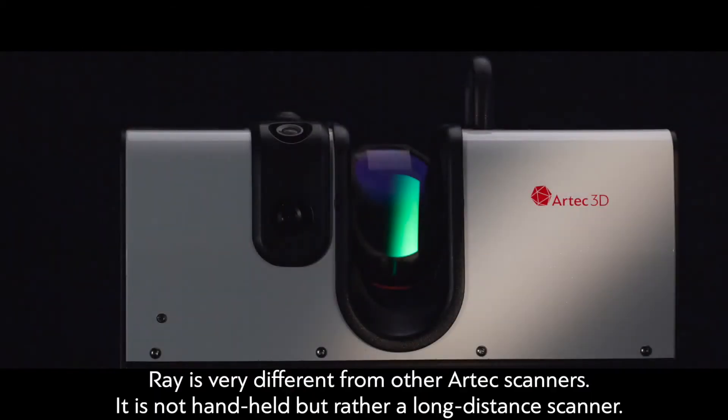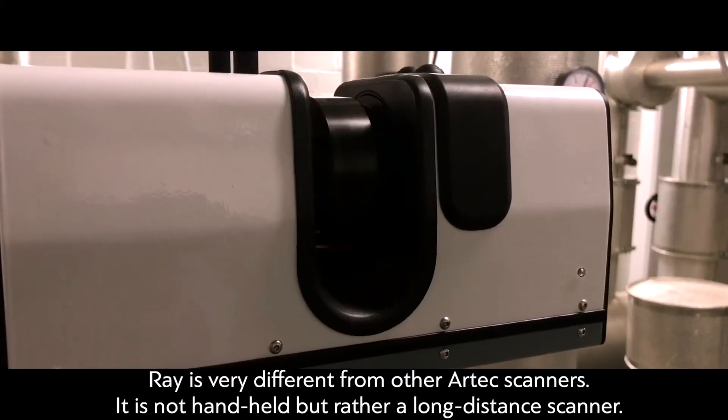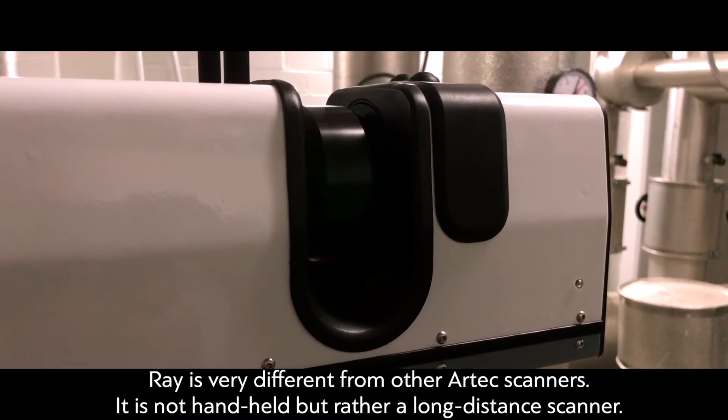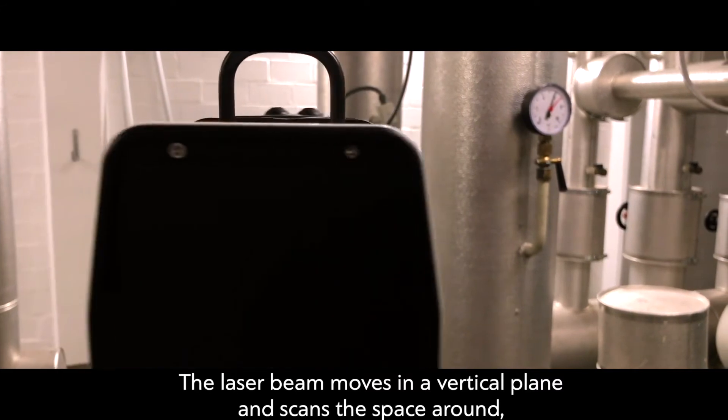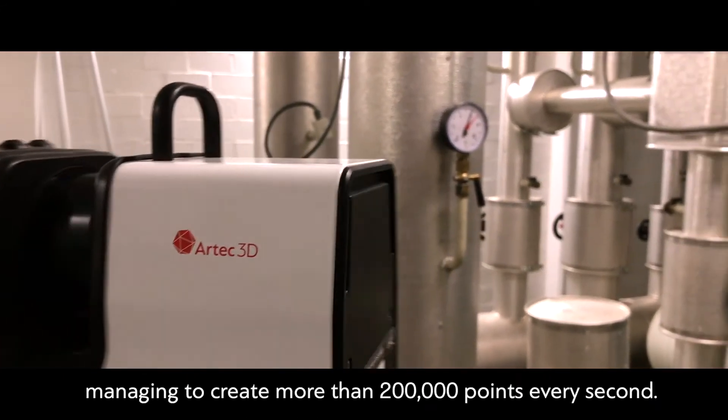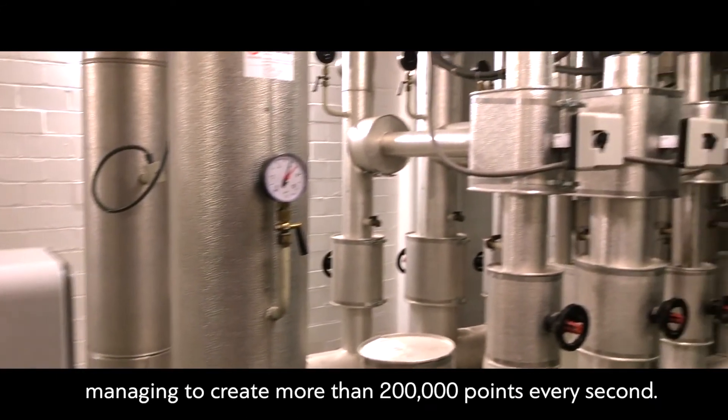But Ray is very different from other Artec scanners. It is not hand-held, but rather a long-distance scanner. The laser beam moves in a vertical plane and scans the space around, managing to create more than 200,000 points every second.